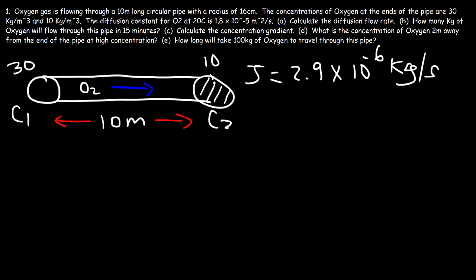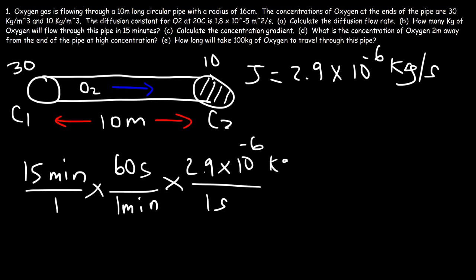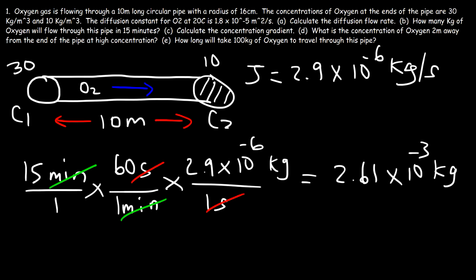Now for Part B: how many kilograms of oxygen will flow through this pipe in 15 minutes? We use unit conversion — we have 15 minutes and need to convert to seconds, since the diffusion flow rate is in kilograms per second. One minute equals 60 seconds. Multiplying the time by the diffusion flow rate gives us the mass: 15 times 60 times 2.9 times 10 to the minus 6, which equals 2.61 times 10 to the minus 3 kilograms.